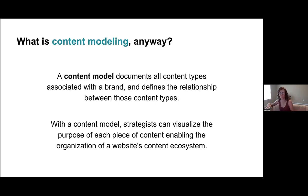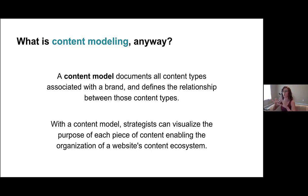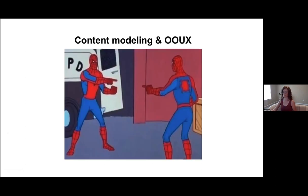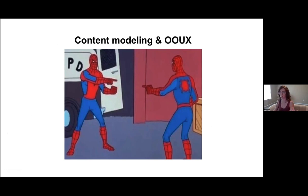What's content modeling? When I first saw OUX, I thought: is that OUX or is that content modeling? They looked very much the same. A content model is documenting all content types associated with a brand — and content types can also mean objects — then defining the relationships between those content types. This allows us to visualize the purpose of each piece and enables the organization of a website's content ecosystem. When thinking about information architecture, we tend to think about 'the right answer,' but sometimes there is no right way — it's the right way based on context. When I got into the OUX masterclass, it's probably why Sophia and I hit it off right away. They looked very much the same. We're going through the objects, mapping relationships with a domain model or system model, mapping all the attributes.